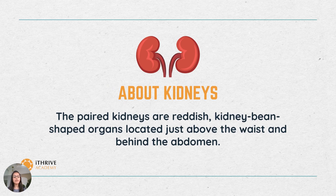Starting with what kidneys actually are — these are paired organs. There are two kidneys which are reddish kidney-bean shaped and are located just above our waist and behind the abdomen.